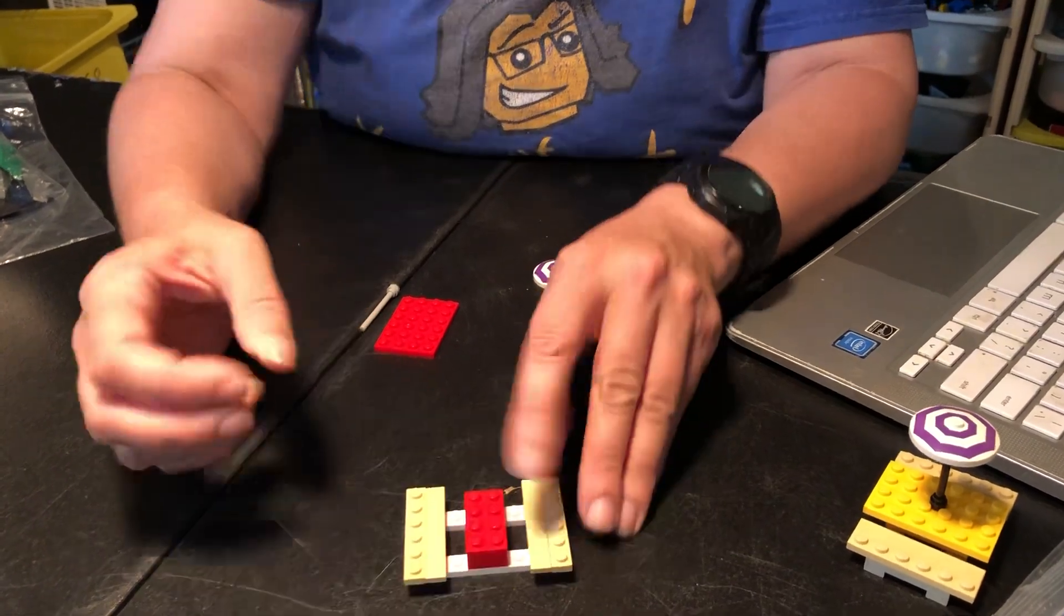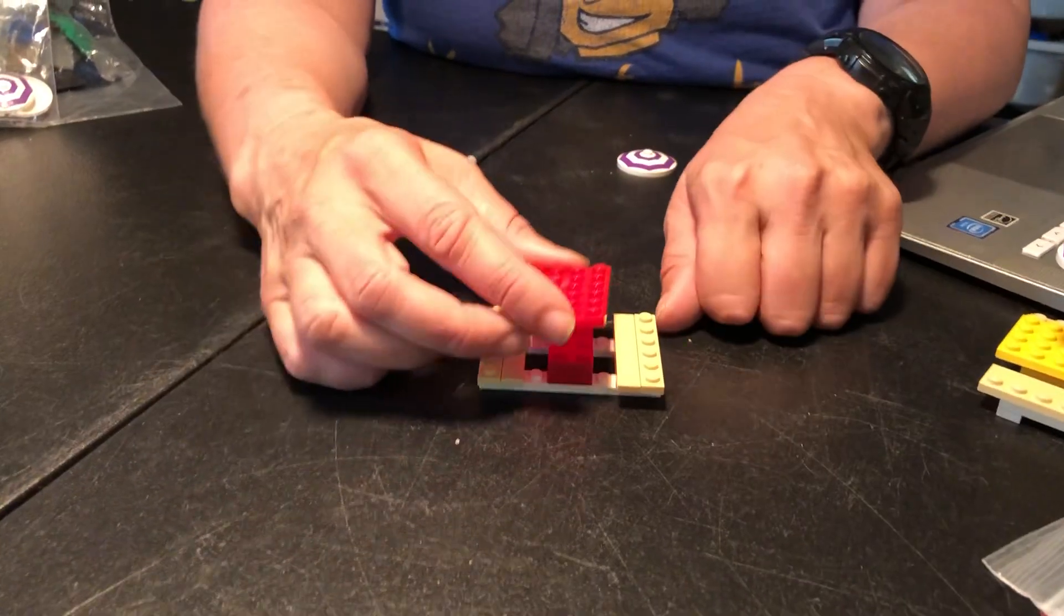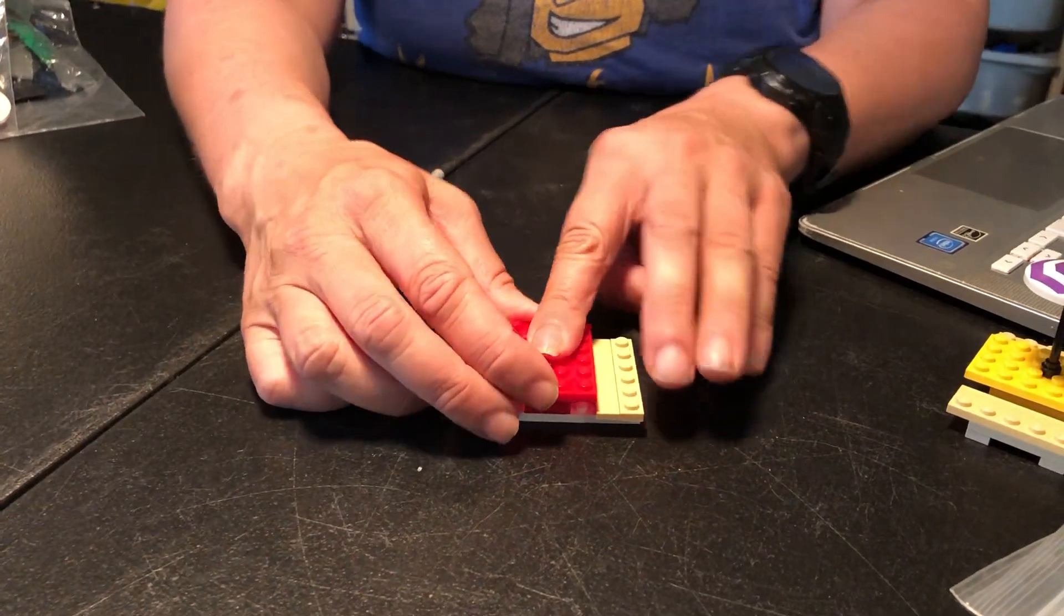And now this is going to hold up the table. So that's a 2x4 right in the center and then a 4x6 on top.